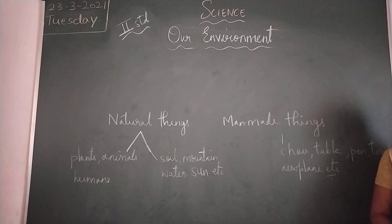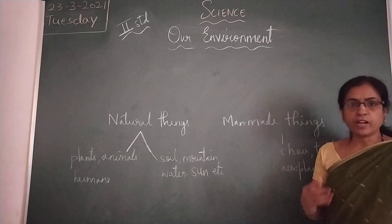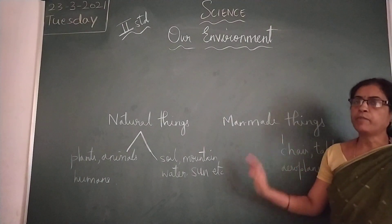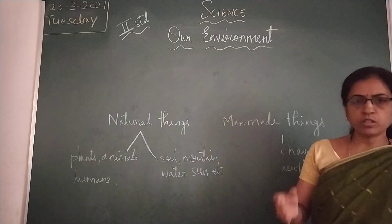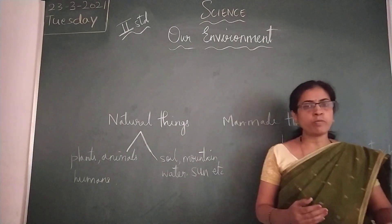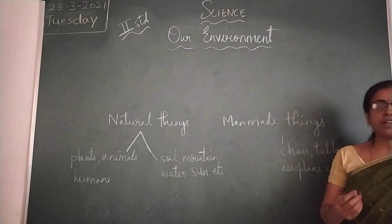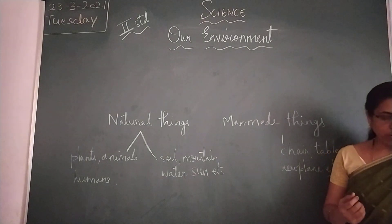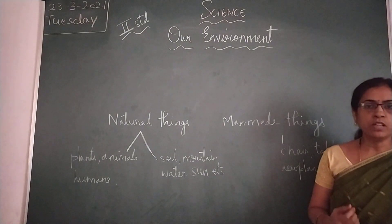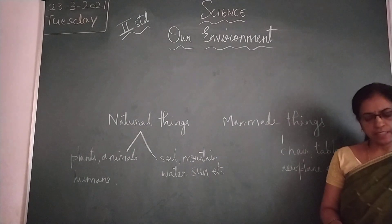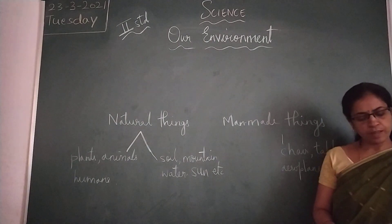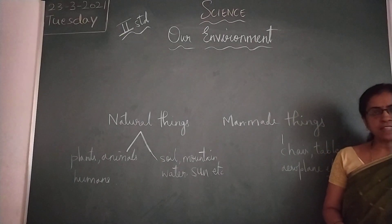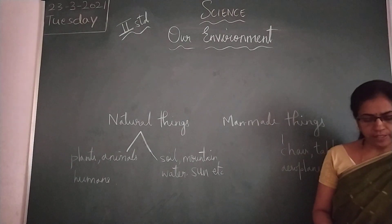All natural and man-made things are made of materials. Different materials are used to make different things. They can be made of materials such as wood, rubber, leather, glass, plastics, and metals.